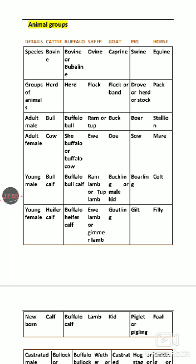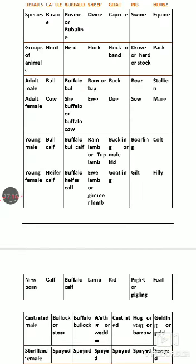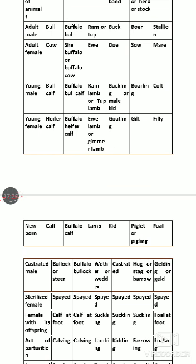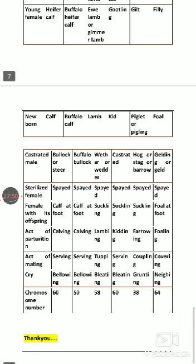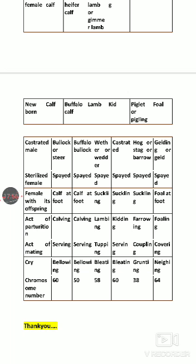Horse group names, adult male, adult female — for example, sheep: adult male and adult female — are very important from the exam point of view. Basic names for sheep, goat, young ones, colt and filly (young male and female horse), newborn, castrated terms should also be known. Gelding is a castrated horse — this should be memorized.